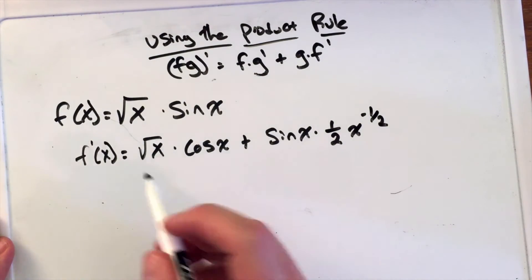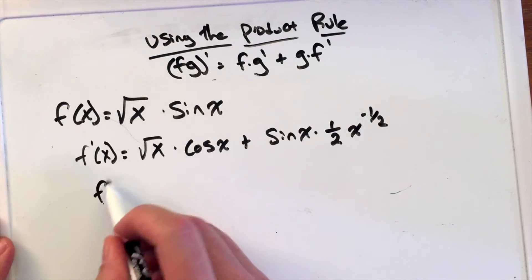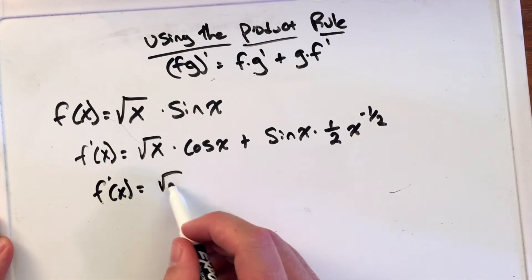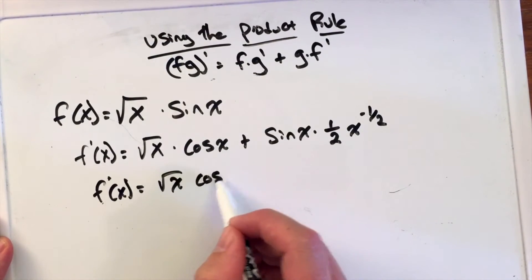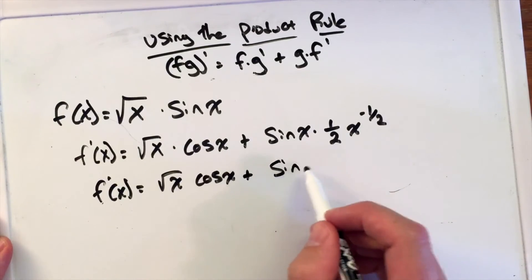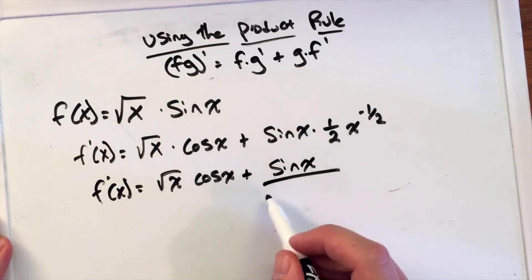We can simplify this: f'(x) = √x · cos(x) plus, leaving sin(x) in the numerator with 2 in the denominator.